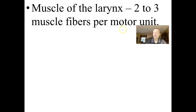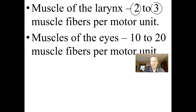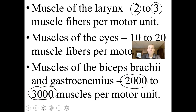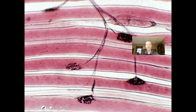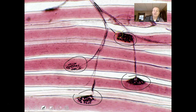There are different motor unit sizes depending on what the muscle needs to do. Muscles of the larynx have two to three muscle fibers per motor unit, giving fine control. Muscles of the eyes have 10 to 20 fibers per motor unit. Muscles of the biceps brachii and gastrocnemius may have 2,000 to 3,000 muscle fibers per motor unit — so not much fine control compared to the larynx. Here you can see the motor neuron axon contacting many muscle fibers at multiple neuromuscular junctions.